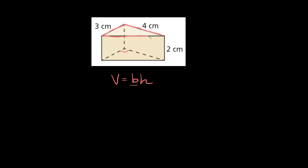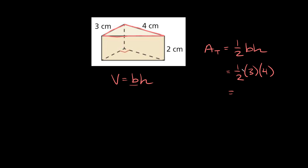How do you find the area of just a triangle? Well the area of a triangle is going to be equal to one-half the base times the height. So here you can see that the base is 3 centimeters. So the area of this triangle is going to be equal to one-half times 3 centimeters times the height of the triangle, which is 4. So one-half times 12 is equal to 6, so the area of this face is equal to 6 centimeters squared.